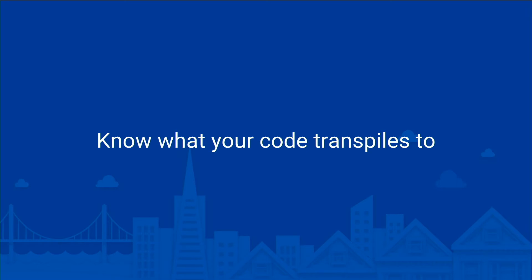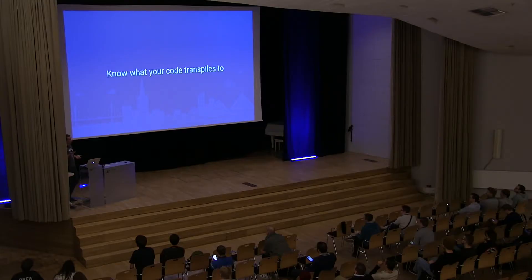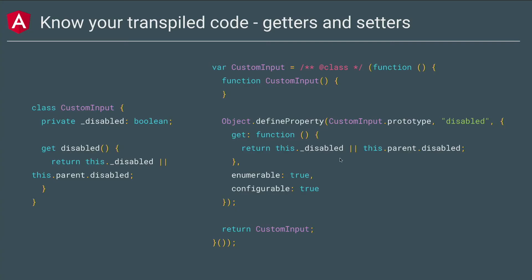Another thing that's really useful if you want to reduce your page size is knowing what your code transpiles to. Since we live in an ES5 world, something super short and simple in TypeScript can end up transpiling into a lot of code. My first example is getters and setters. On the left, I've got a custom input component with a standard getter that checks if the input is disabled, or otherwise if the parent is disabled. But on the right, you can see what TypeScript transpiles it to — there's a bunch of ES5 boilerplate. Over a large project, if you put getters and setters all over the place, it's going to really balloon your page size.